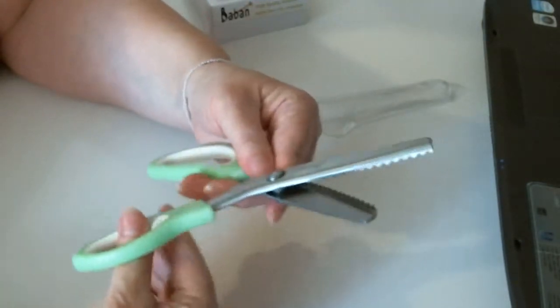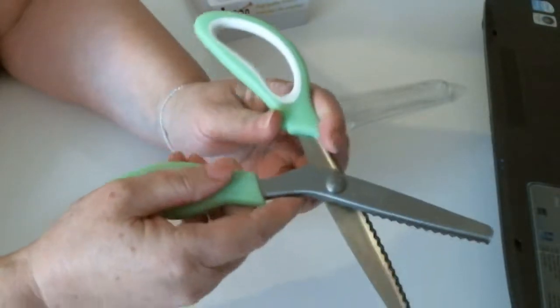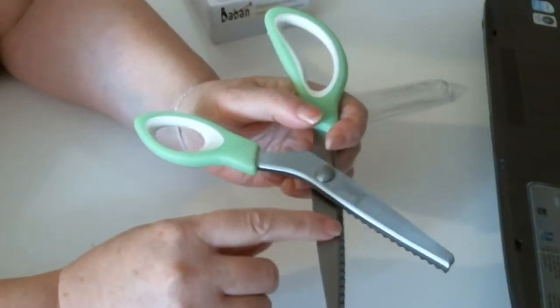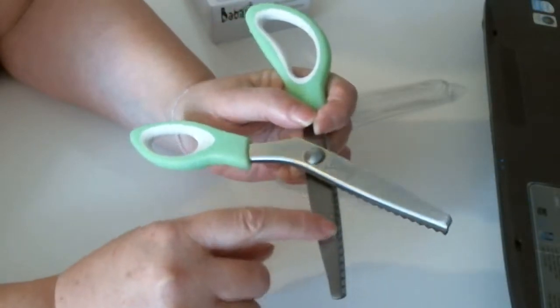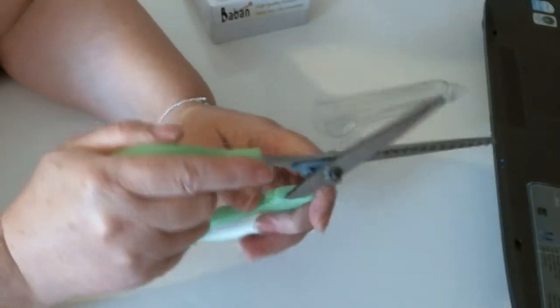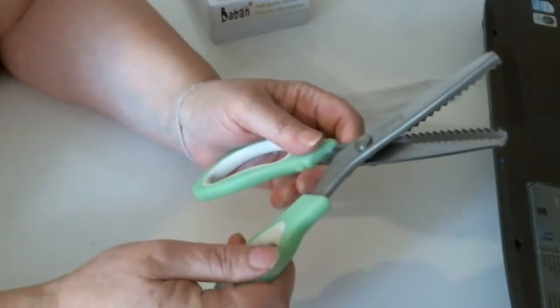They've got a diagonal serrated edge if you see that. It's quite sharp. And they've got that on both sides, which makes them pinking shears.